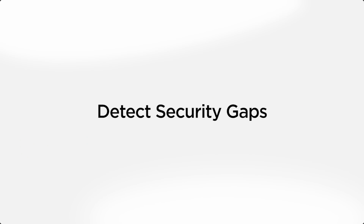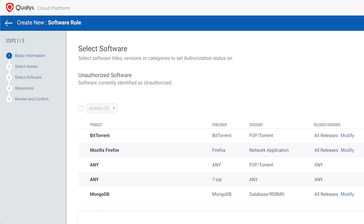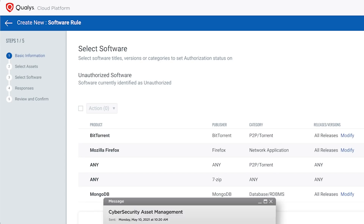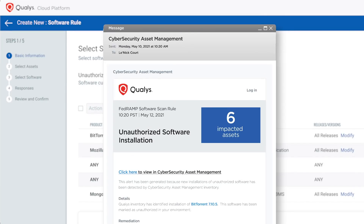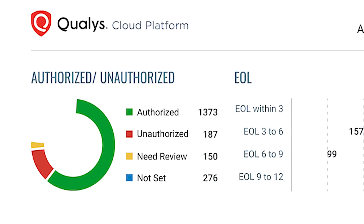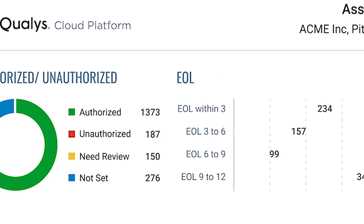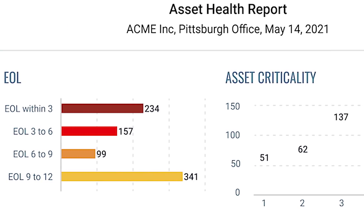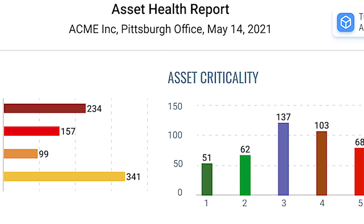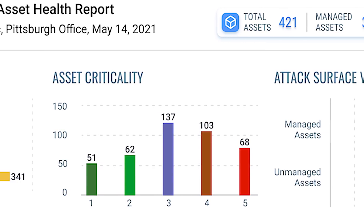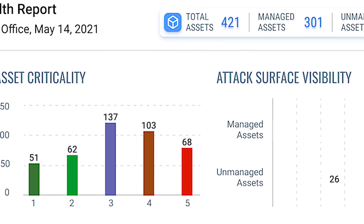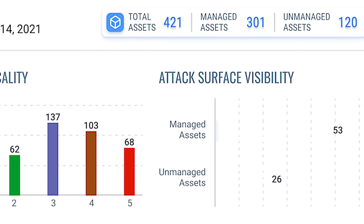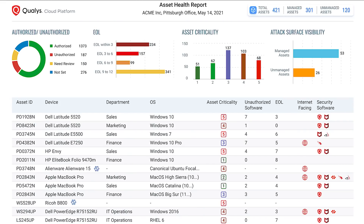Define rules to protect critical assets and get automated alerts whenever an unknown device connects to the network or unauthorized software is detected. You can also monitor the health of your assets in a single view, identifying software authorization, end-of-life software, asset criticality, attack surface visibility, and gaps in your security tools.